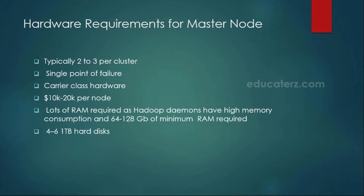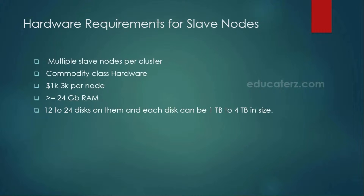Compared to master machines, the slave machine hardware requirements are commodity class hardware — that is cheaper hardware you can purchase. The cost is $1,000 to $3,000 per machine, and you can have any number of slave machines. In older versions of Hadoop there was a limitation of 4,000 nodes, and if you had more than 4,000 slave machines you would see performance issues.